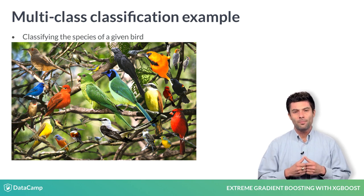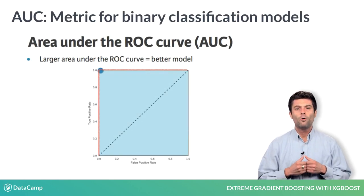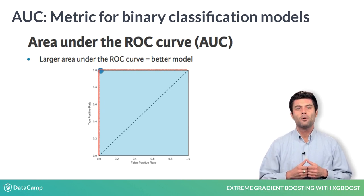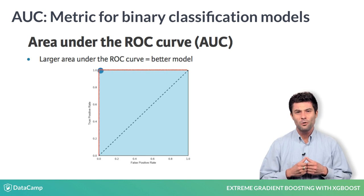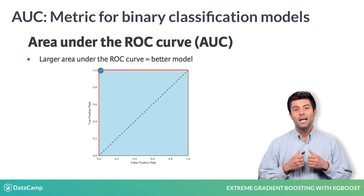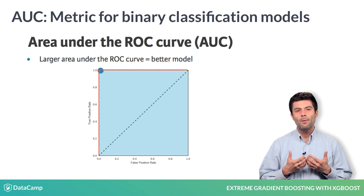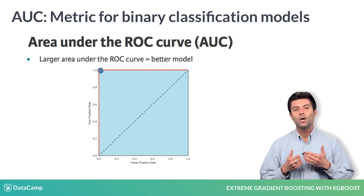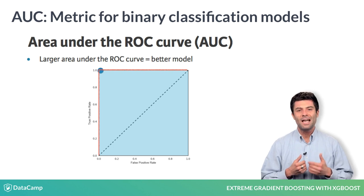When dealing with binary supervised learning problems, the AUC — or area under the receiver operating characteristic curve — is the most versatile and common evaluation metric used to judge the quality of a binary classification model. It's simply the probability that a randomly chosen positive data point will have a higher rank than a randomly chosen negative data point for your learning problem.